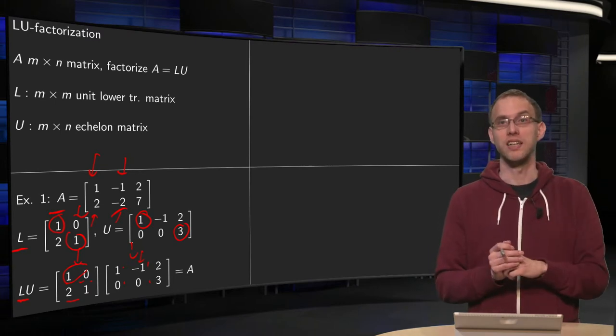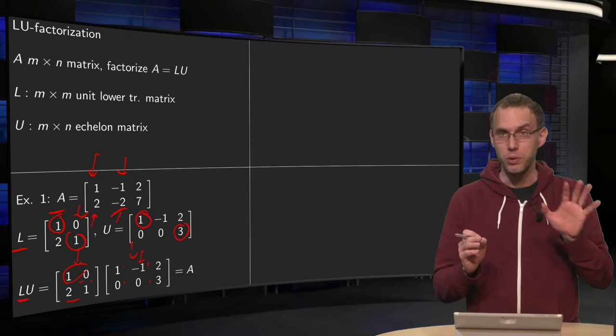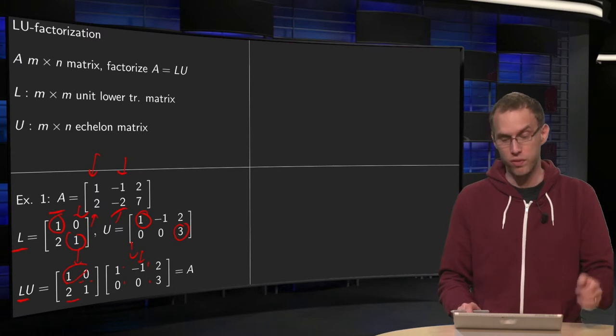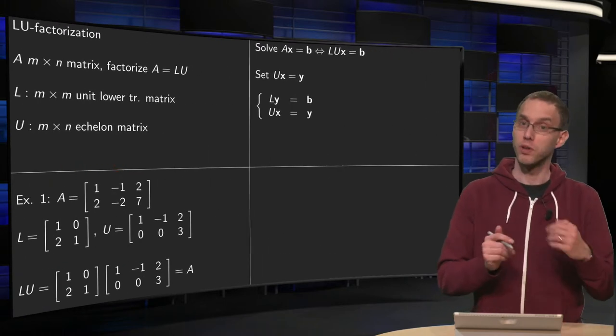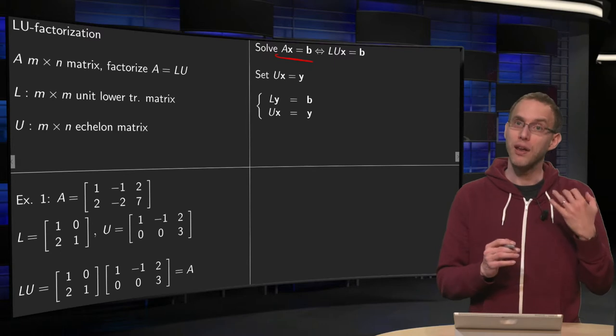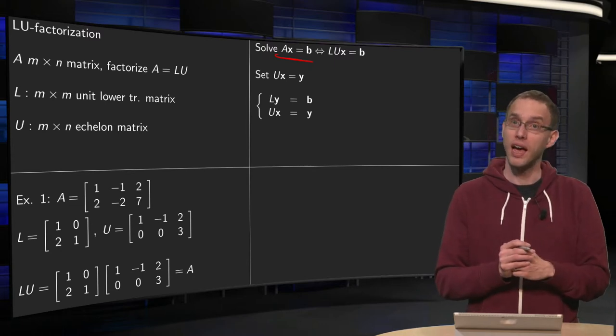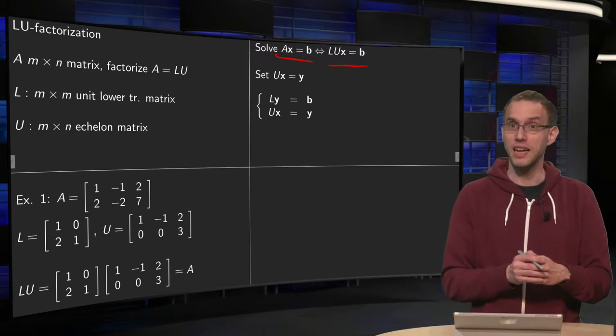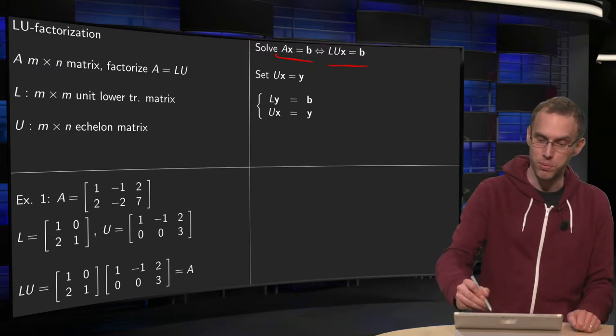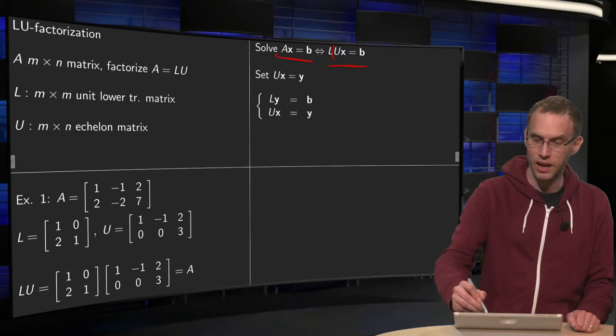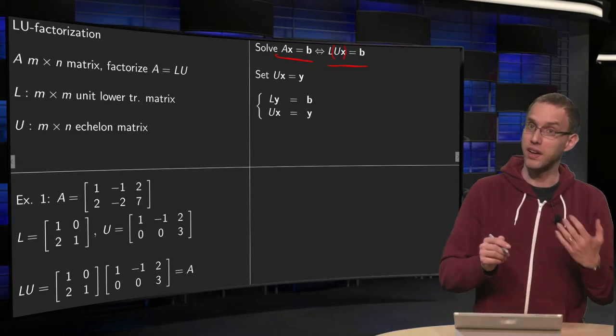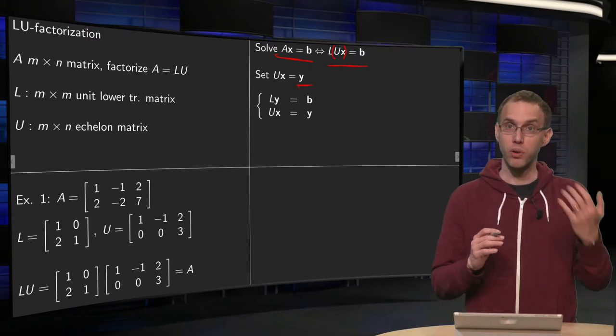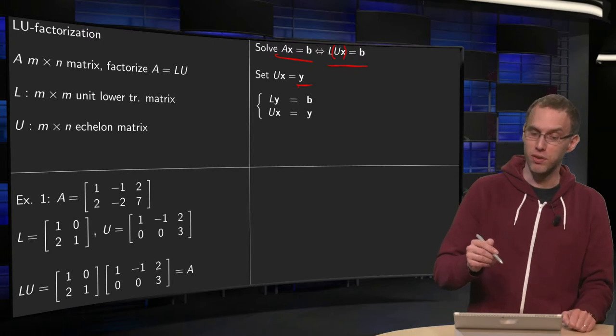So question: how to find L and U for a given A? We will do that later. First we will see how we can use this decomposition to solve a linear system. So we want to solve Ax equals b, and we know A equals L times U. So that means that we want to solve L times U times x equals b. Now we can put brackets like this, and define a new variable y as Ux equals y. So we don't know x and we don't know y. But then the trick is as follows.